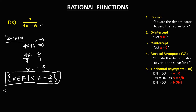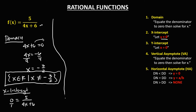To find the x-intercept, we let y equal to 0. So 0 equals 5 over 4x plus 6. Cross multiplying gives 5 equals 0. Since there is no variable left, therefore there is no x-intercept.